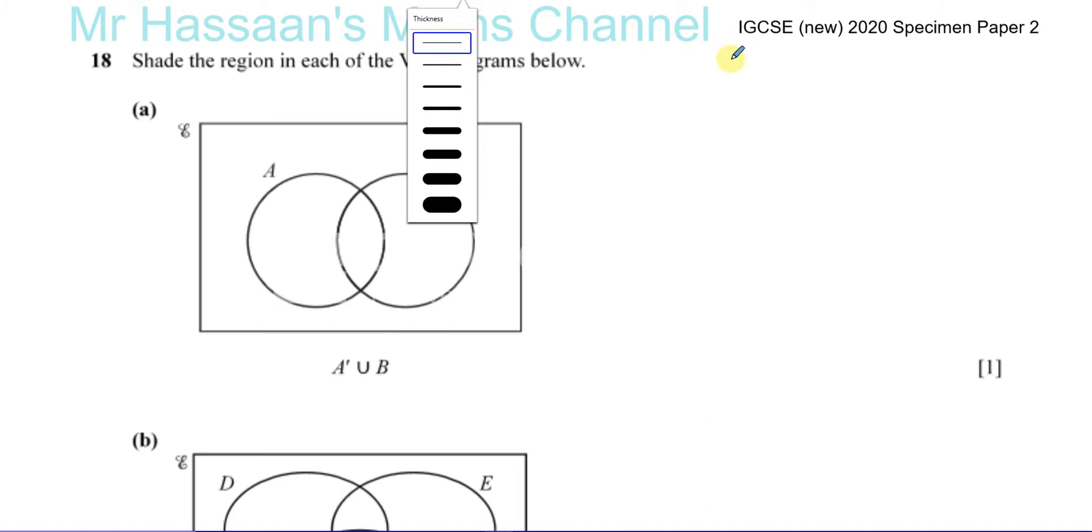It's something very simple. This is what's called the universal set, this rectangle, and these two circles are set A and set B. So basically what we got to shade is a region which is shown by A complement union B.